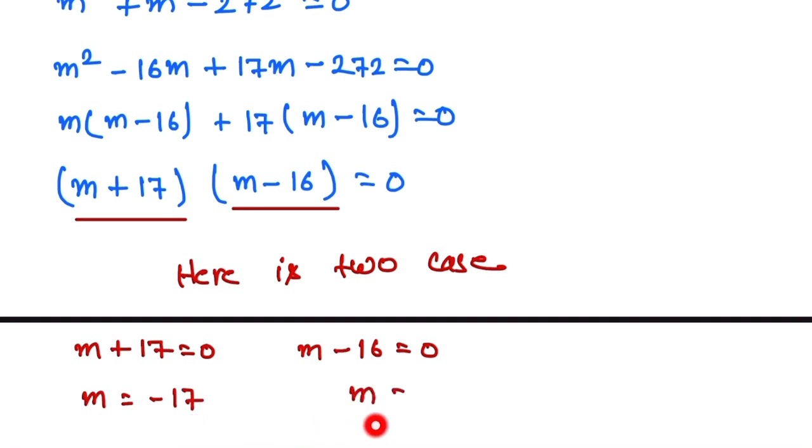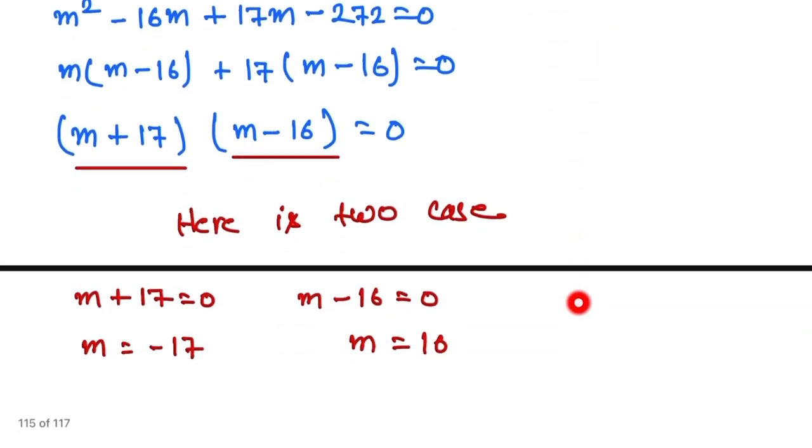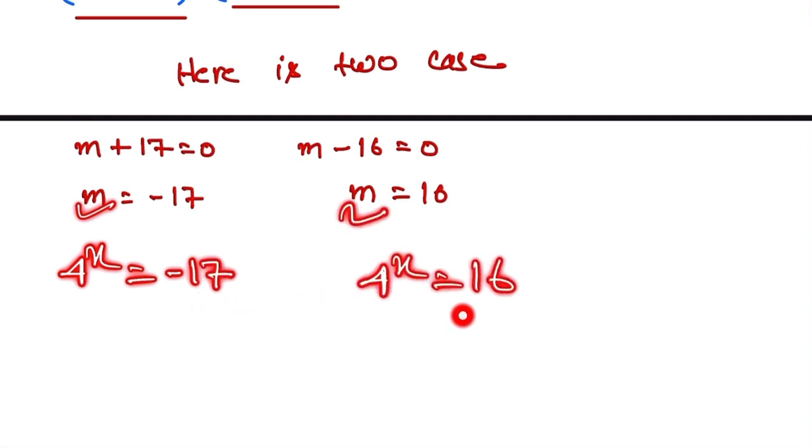Now we put the value of m. We already said that m = 4^x. So we put that here: 4^x = -17 and 4^x = 16.